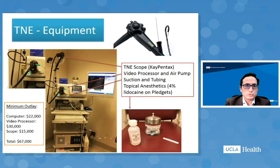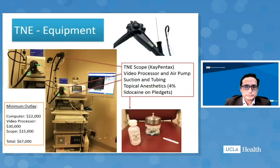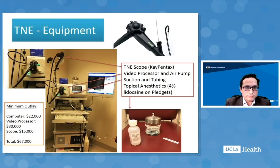For TNE equipment, it's quite straightforward. You need an endoscope, a video processor and air pump, suction tubing, a suction apparatus in the room, and topical anesthetics — typically 4% lidocaine on pledgets. It is somewhat expensive to start; the minimum outlay currently is probably about $67,000.